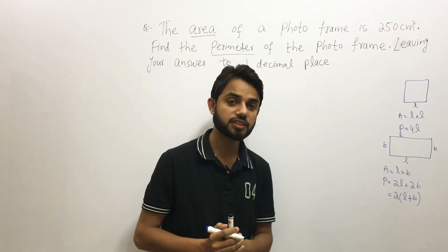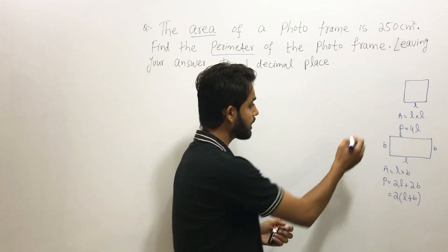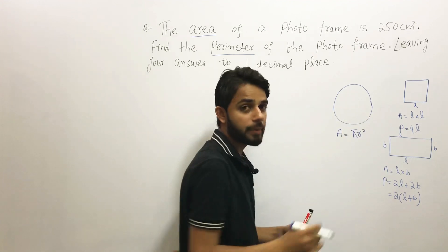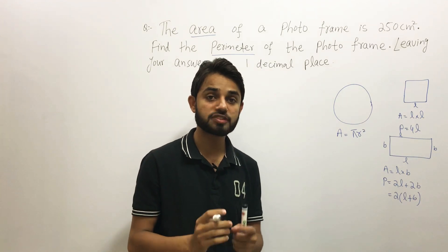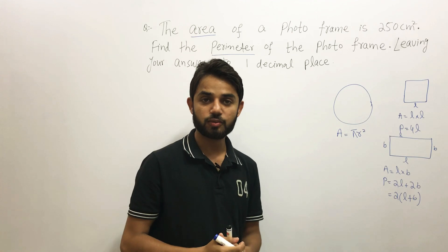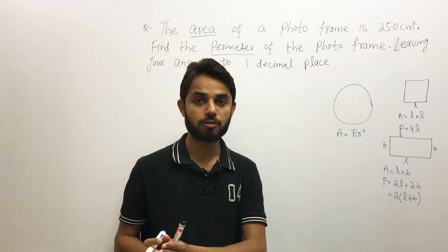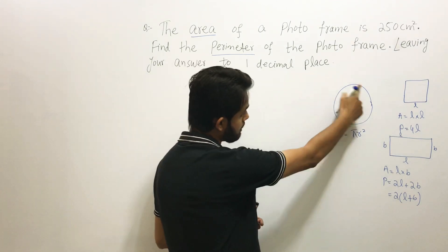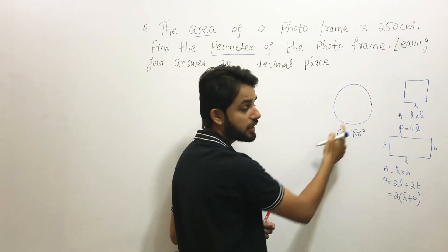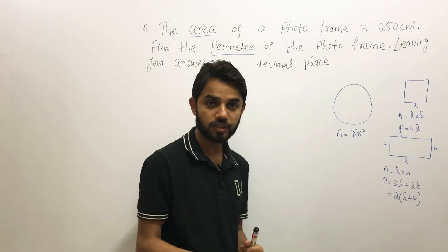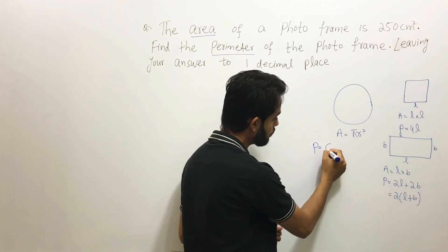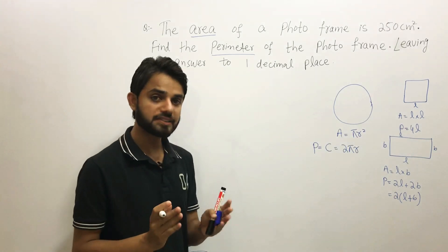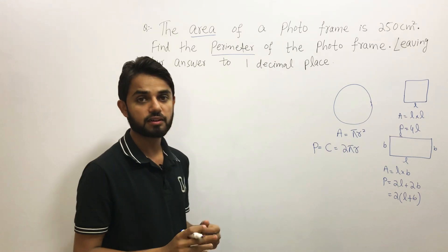The same logic applies for a triangle. For a circle, the area is π R squared — that is the inside space. But a circle has no sides, so how do we find its perimeter? The outer boundary of a circle is called its circumference, so the perimeter of a circle is the circumference, which is 2πR.